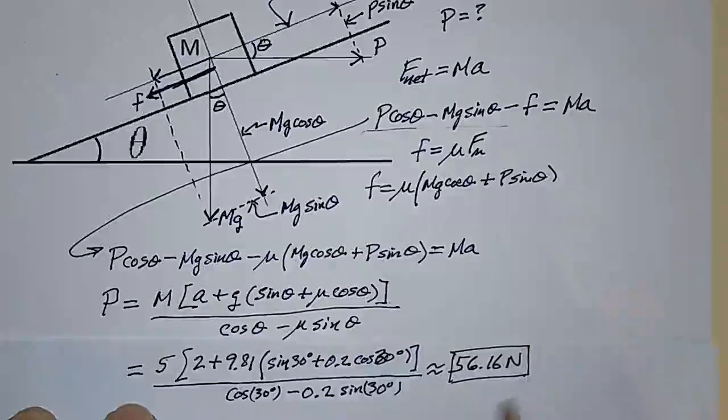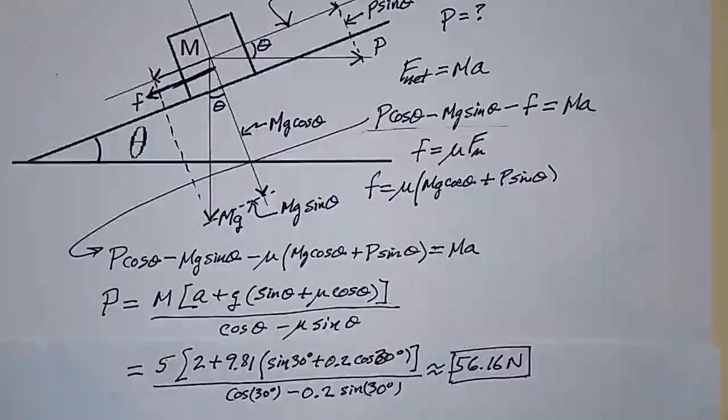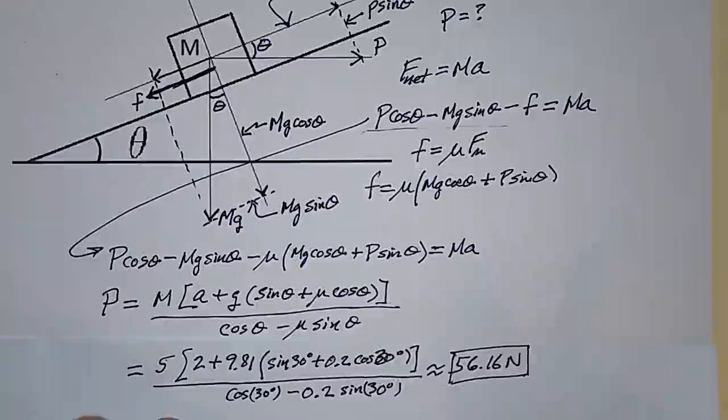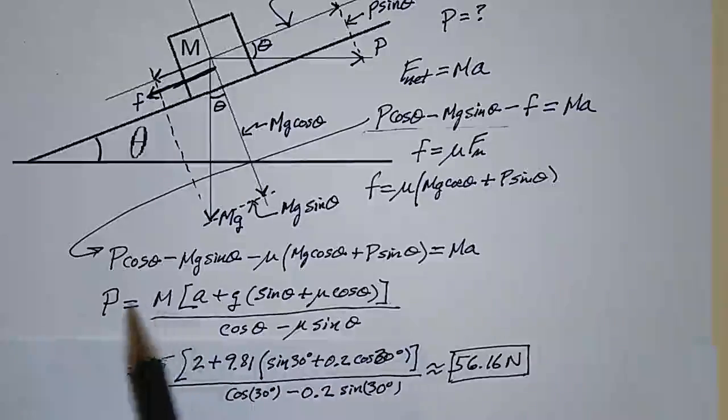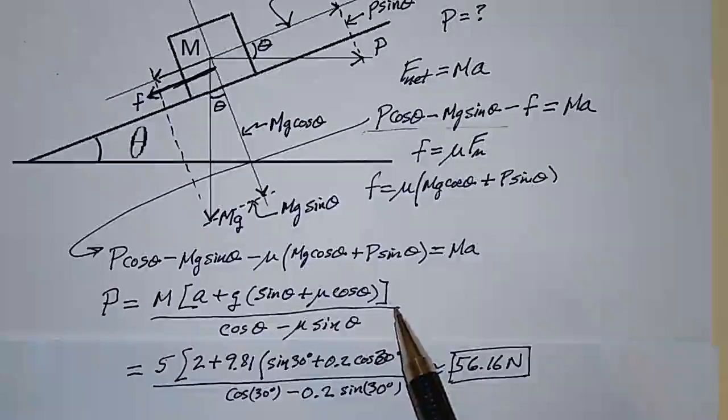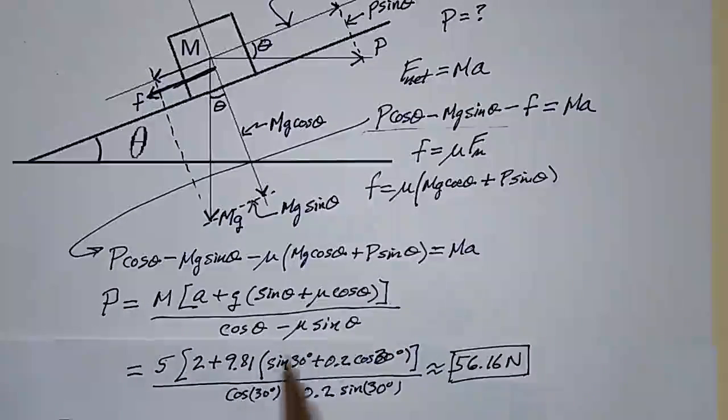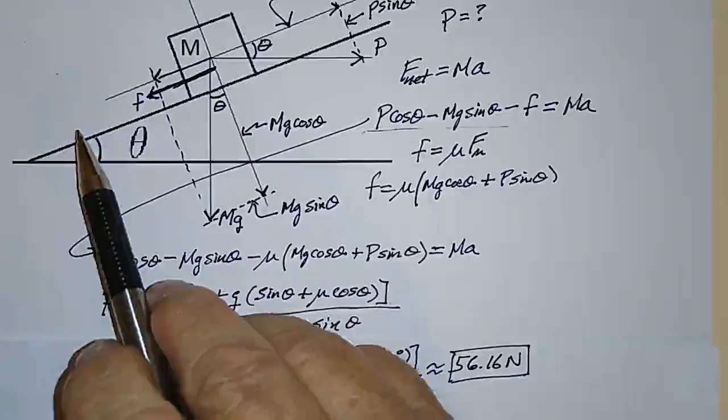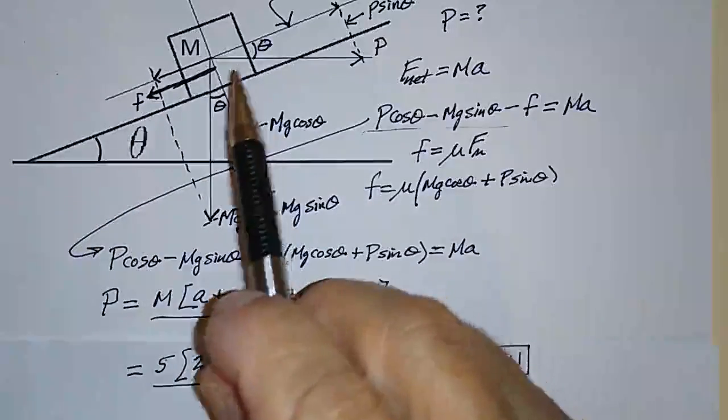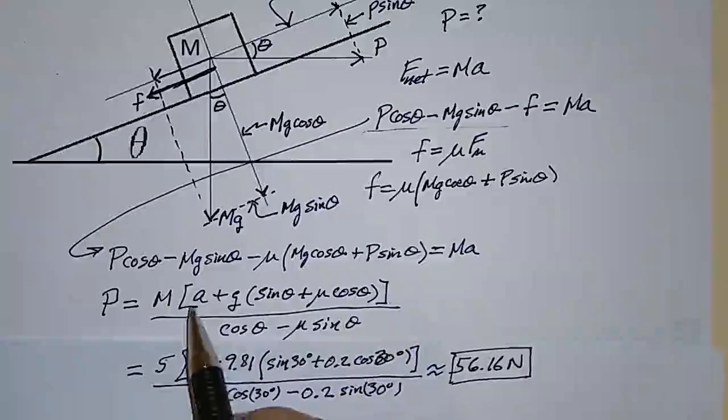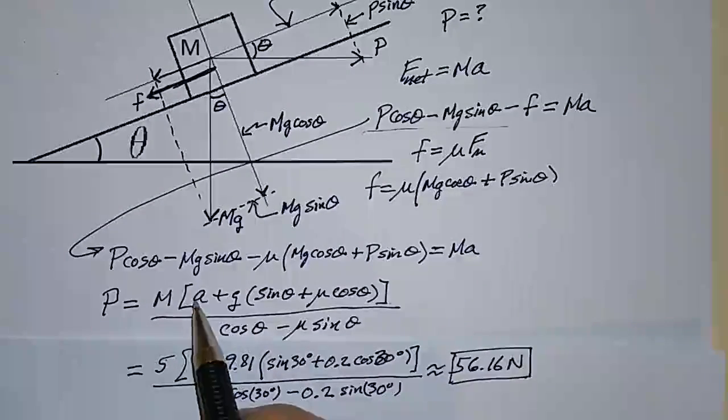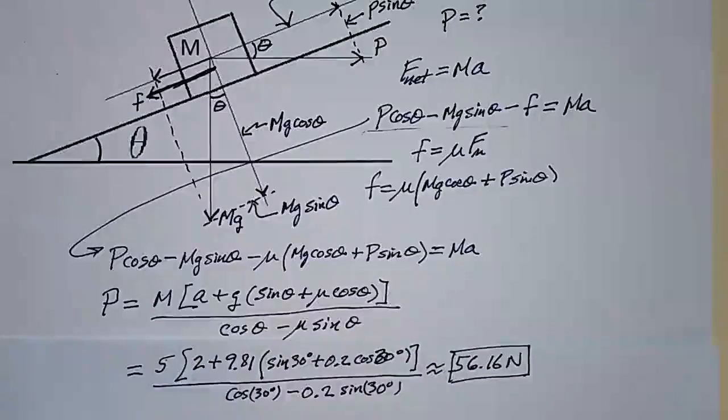What I want to caution you about is assuming that's the end of the problem. If you have this equation right here, you might be tempted to say, what if it's accelerating down the ramp at 2 meters per second squared? So you might be tempted to just change the sign of this and put a minus 2 in here, but that wouldn't work.